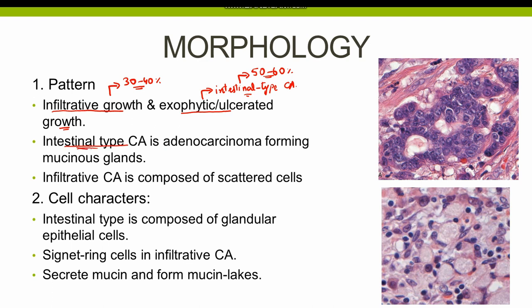The intestinal type of gastric carcinoma is an adenocarcinoma, which means it forms mucinous glands. As seen here, these glands are formed in the intestinal type of carcinoma; they are composed of neoplastic cells and are filled with mucin. The infiltrative carcinoma, in contrast, is composed of scattered cells not forming any particular pattern due to loss of cellular adhesions.